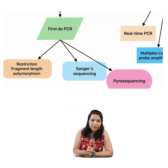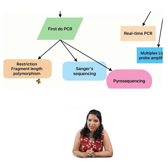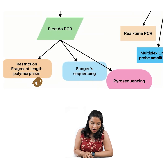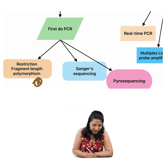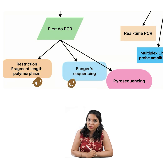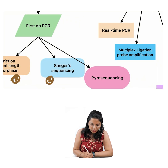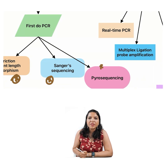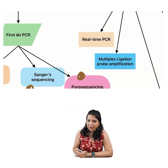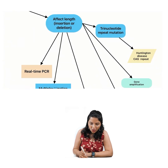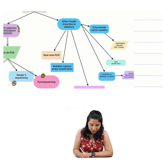First, what we have to do is a PCR. After PCR, we can either do restriction fragment length polymorphism, or we can do any sequencing technique like Sanger sequencing or pyrosequencing.